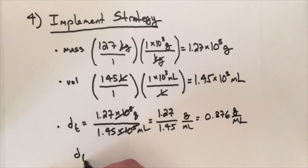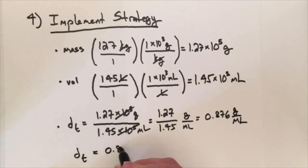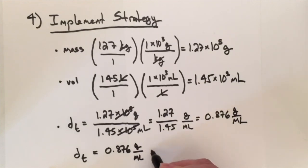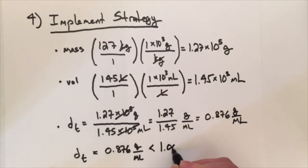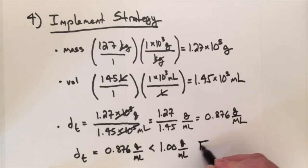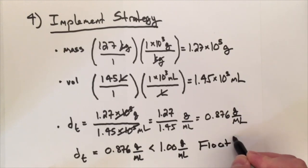The density of toluene is 0.876 grams per milliliter. This is less than the density of water, which means that toluene will float on top of the water.